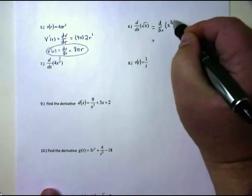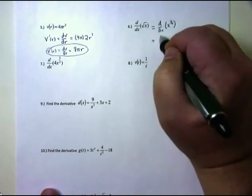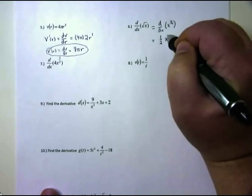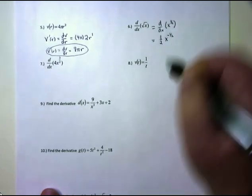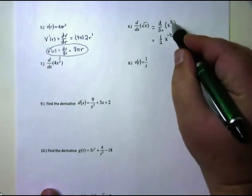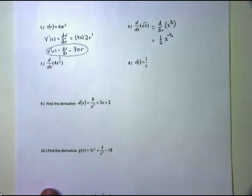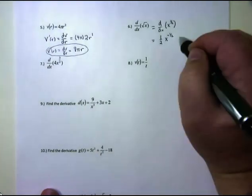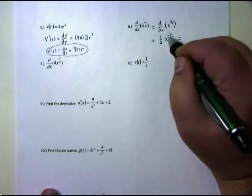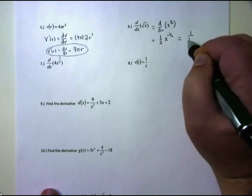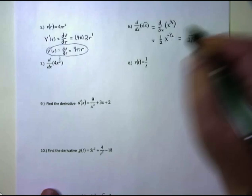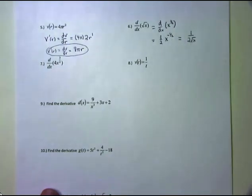So what is the derivative of x to a power, even if it's a fraction? We don't do square roots — we use fractional exponents. Bring down the power 1/2, keep x, and subtract 1: 1/2 minus 1 is negative 1/2. You can leave it as (1/2)x to the negative 1/2, or clean it up: the negative exponent goes to the denominator, and the 1/2 power is a square root — giving 1 over 2√x. We'll accept either form.